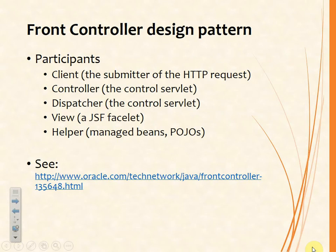In the front controller design pattern we have five participants. We have the clients — whoever has submitted the HTTP request. That gets sent to the front controller, which in the JSF environment is the control servlet. There will also be a dispatcher, which from our point of view as users of the JSF framework we think of as the control servlet — it dispatches requests to other components. There will also need to be a view, which in our case is a JSF facelet, and some helpers. These helpers smooth the way for the response to be generated. Typical things will be managed beans and any POJOs we write to separate concerns and make our applications more readable and maintainable.